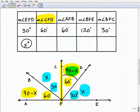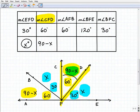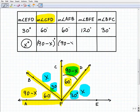Now we need to go back and look at our chart. So measure of angle CFD, let's go and find it. CFD is this angle right here, and that would be 90 minus X degrees. The measure of AFB is also 90 minus X.